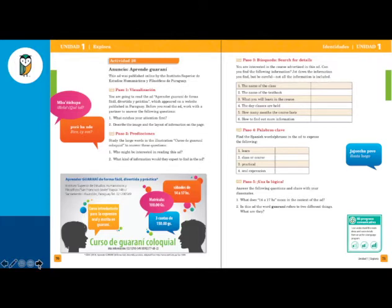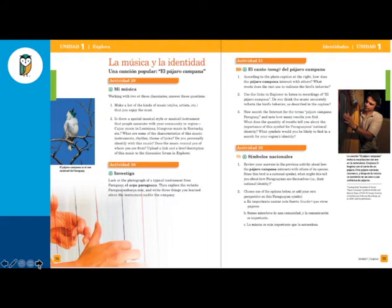You'll see the tasks that go along with that activity. The next sub-theme is Music and Identity. Here we're looking at the National Song of Paraguay, which is a song based off of a bird song — the pájaro campana — which sounds almost like harp music. They discuss how that bird is a national symbol and how music can play a part in our identity.